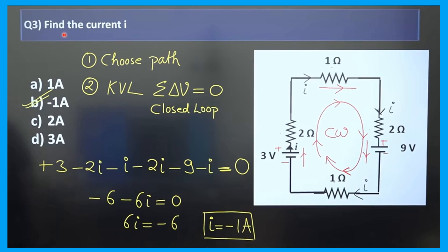Let us solve a problem using Kirchhoff's law. We need to find current I. The circuit is a closed loop. Step one: choose a path — I am taking the clockwise direction. Since this is a closed loop, Kirchhoff's voltage law applies: summation of delta V equals zero. The current I flows in the clockwise direction.